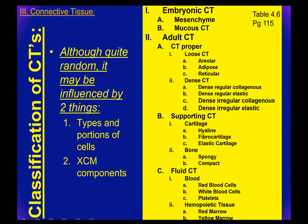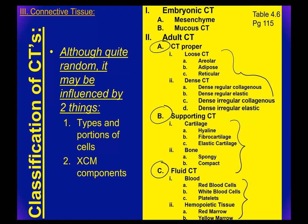These are the connective tissues. We've got embryonic connective tissue and adult connective tissue. Under adult, we've got connective tissue proper, supporting connective tissue, and fluid connective tissue, each with subsets underneath. Let's talk about those.